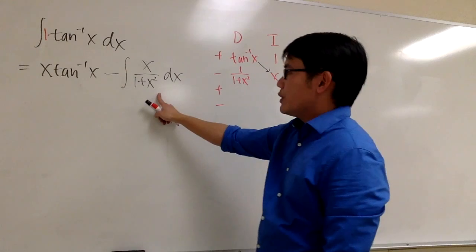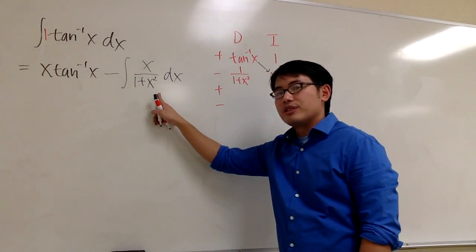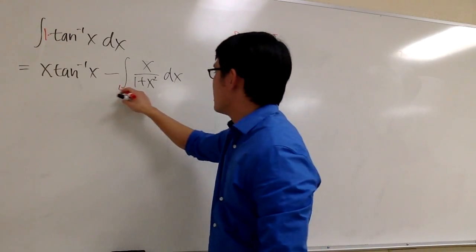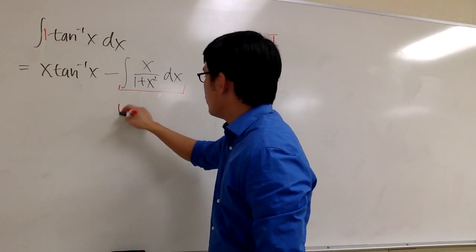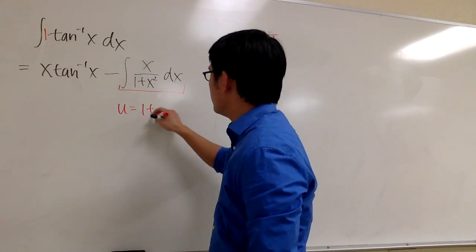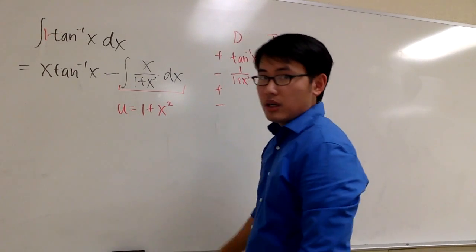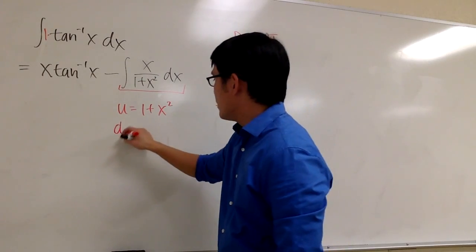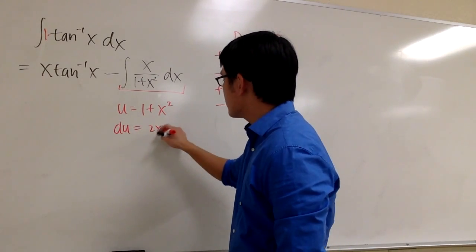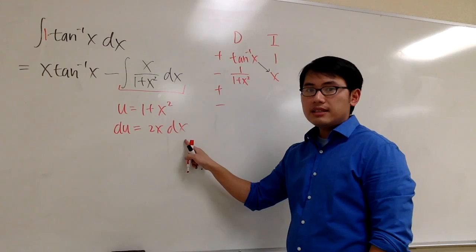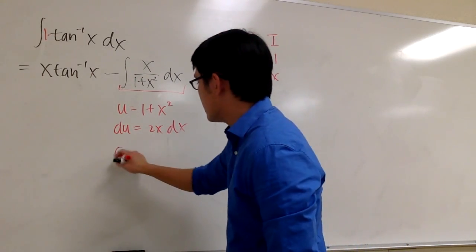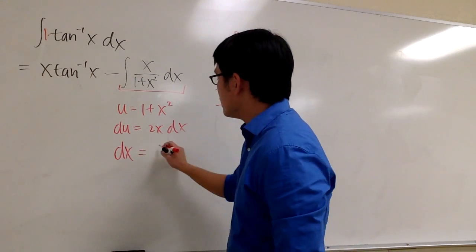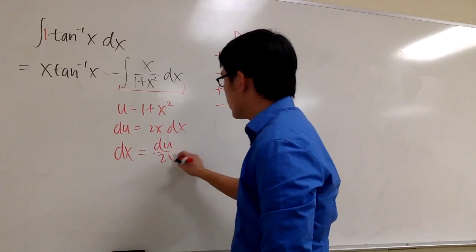This is something that we can do with u substitution. Or you can just do this in your head. But I will show you guys the work. Let's take a look at this. I will take u equals to the denominator, which is 1 plus x squared. And then I will just differentiate both sides. du is equal to 2x. dx, I have to isolate the dx, divide both sides by 2x, I get dx equals to du over 2x.